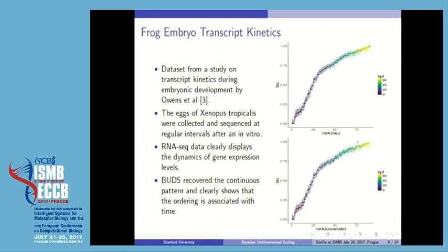This suggests that the samples from the first part of the data trajectory are rapidly changing in terms of their gene expression, rather than the last part, which also suggests that the development process is stagnating. The direct comparison of the recovered coordinate with the actual time shows the ordering of the hours post-fertilization.